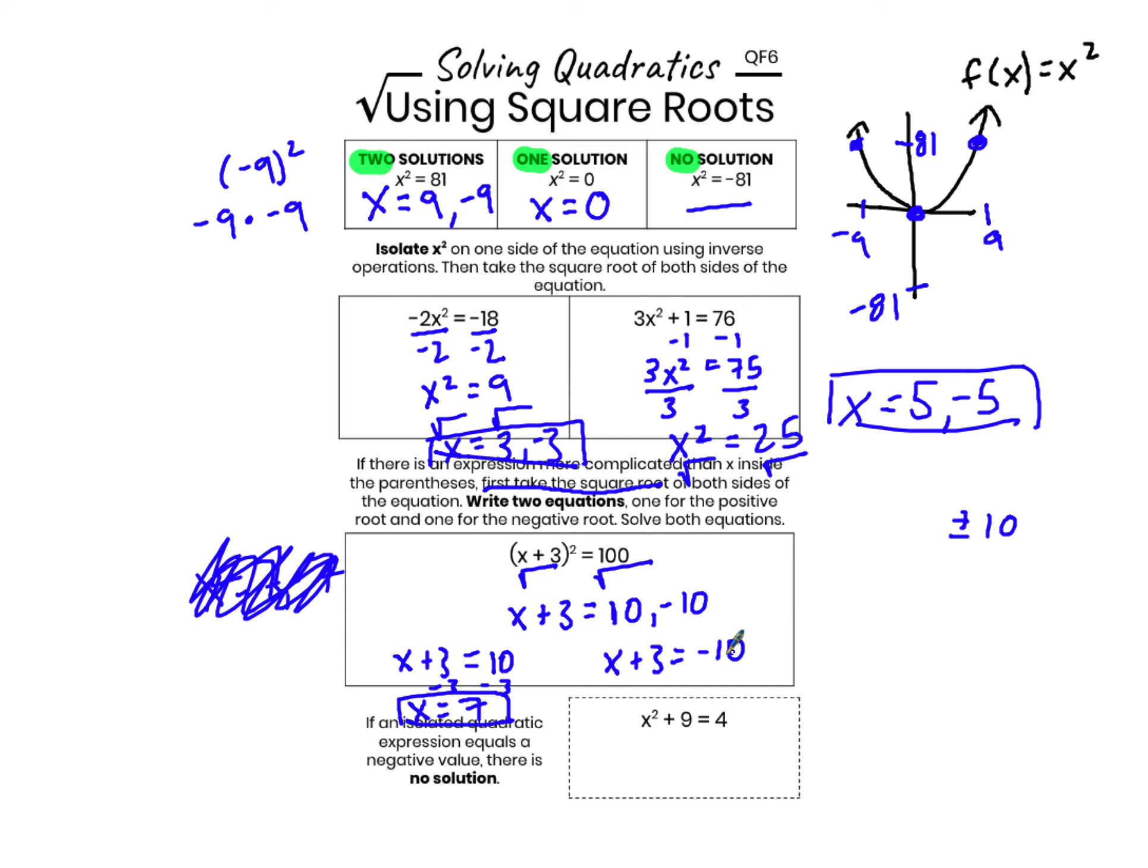When I solve this second equation, subtracting 3 from both sides, I get x equals negative 13, not negative 7. This makes sense when I check my answer. Negative 13 plus 3 equals negative 10, and negative 10 times negative 10 is 100. So these are my two solutions, x equals 7 and x equals negative 13.